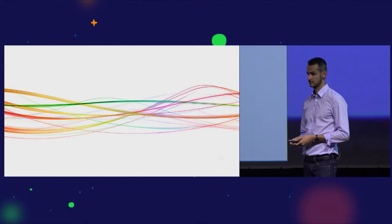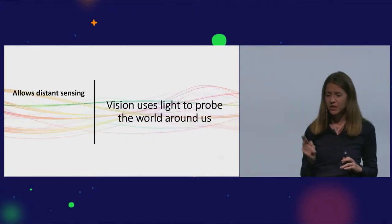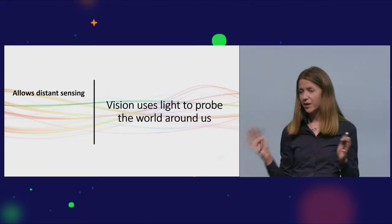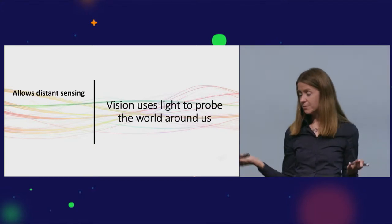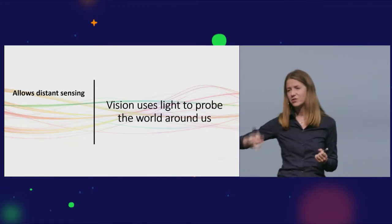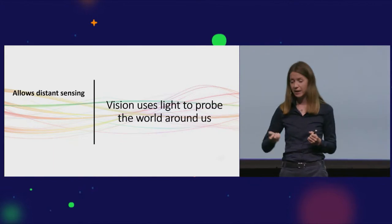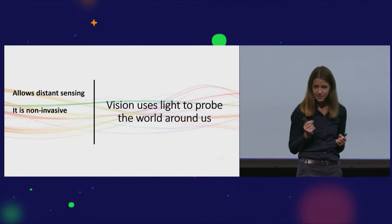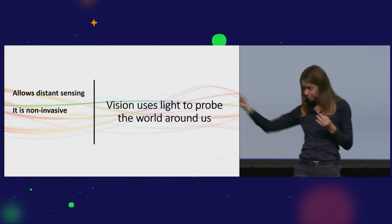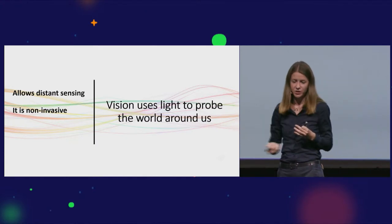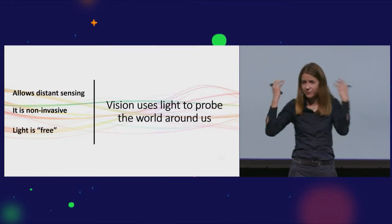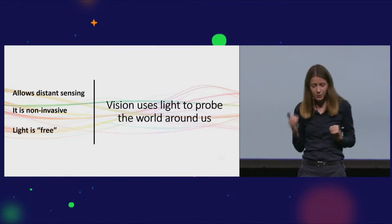Before we dive into the talk, let's recap on what is actually vision. Vision is a tool that uses light to probe properties of objects out there in the environment. Why light? First, it allows us distant sensing. We don't have to actually go to an object and touch it. Light sensing is also non-invasive, we don't change the state of the system or the object that we are observing too much.